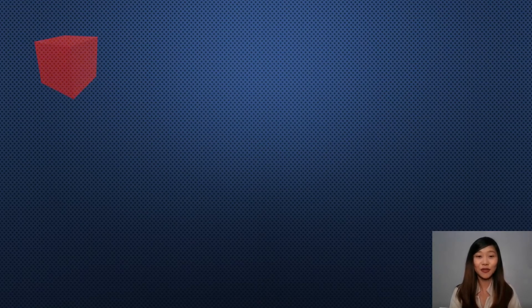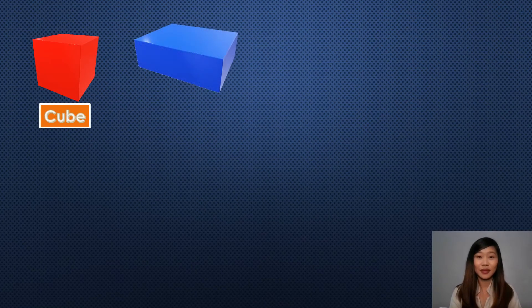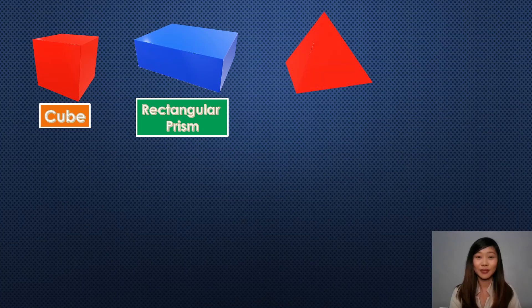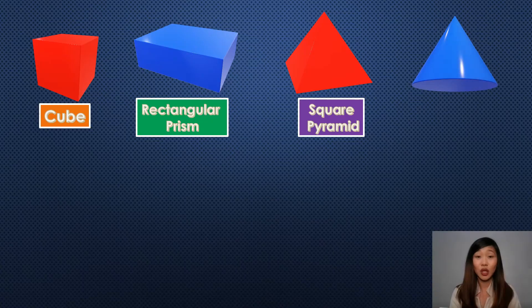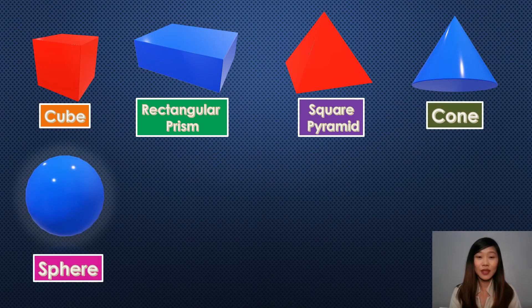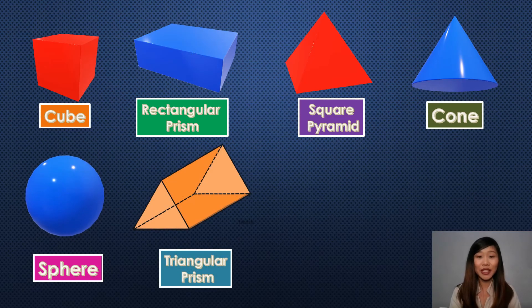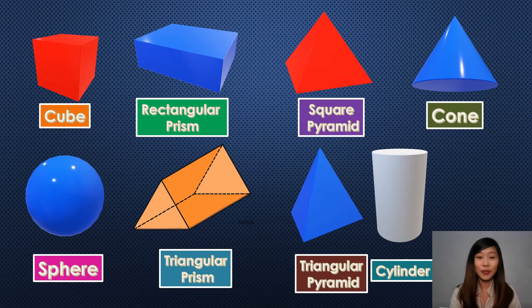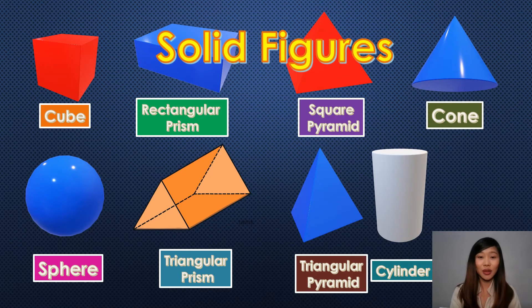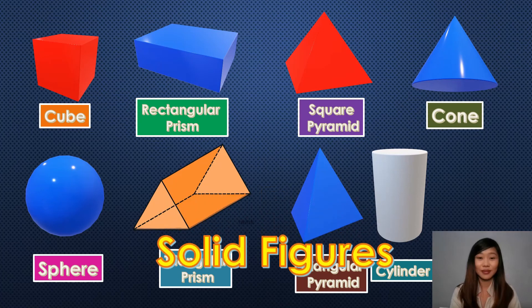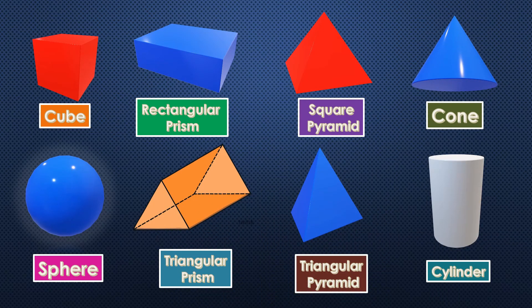Did you take note of the different solid figures? Let's name them one by one. We have cube, rectangular prism, square pyramid, cone, sphere, triangular prism, triangular pyramid, and lastly, cylinder. These are called solid figures. Can you give examples of real objects in your home that are solid figures? Those are examples of solid figures that can be found in your home.